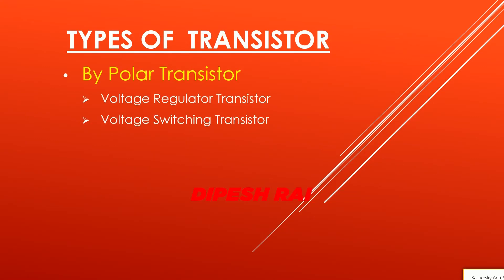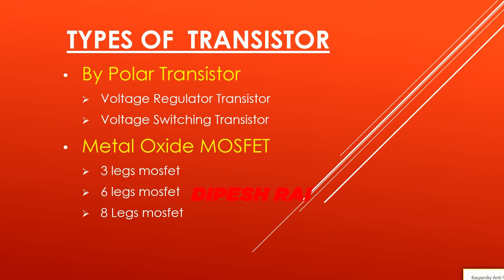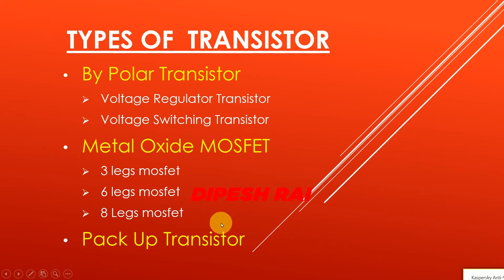Now we are going to discuss the types of transistors. The first type is the bipolar transistor, which has two sub-types: the voltage regulator transistor and the voltage switching transistor. Another type is the metal oxide MOSFET, which has three sub-types: 3-leg MOSFET, 6-leg MOSFET, and 8-leg MOSFET. Finally, there is also the backup transistor.